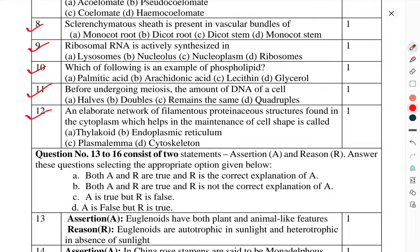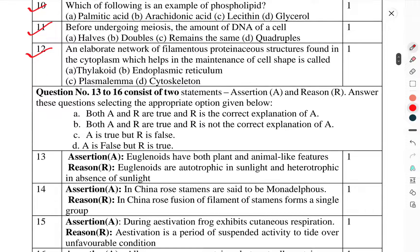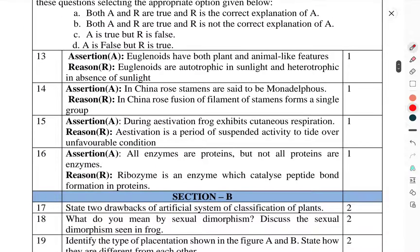Questions 13 to 16 consist of two statements. Question 13: Assertion - Euglenoids have both plant-like features. Euglenoids are autotrophic in sunlight and heterotrophic in absence of sunlight. Question 14: Assertion - In China rose, stamens are said to be monadelphous. Reason - In China rose, fusion of filament of stamens forms a single group. Question 15: Assertion - During estivation, frog exhibits cutaneous respiration. Reason - Estivation is a period of suspended activity to tide over the unfavorable condition.